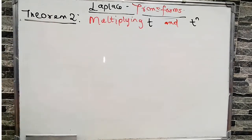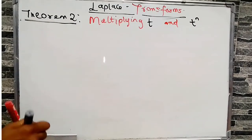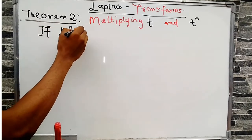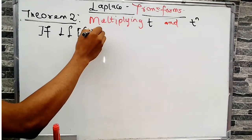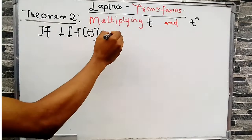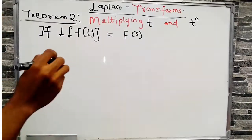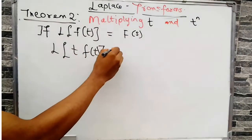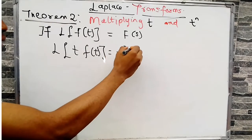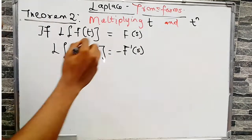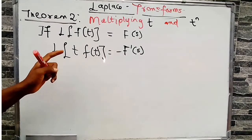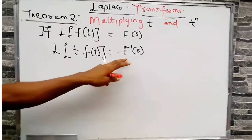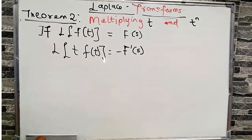We are considering Theorem 2: multiplying by t and t^n. The theorem states that if the Laplace of f(t) equals F(s), then the Laplace of t times f(t) will be equal to minus F prime of s — that is, the negative of the first derivative of F(s). When we have t multiplying a function of t, our answer is the negative first derivative of that function of s.